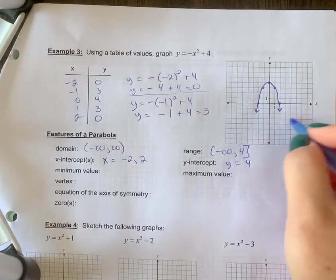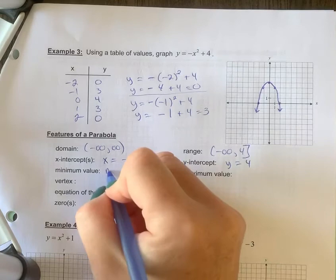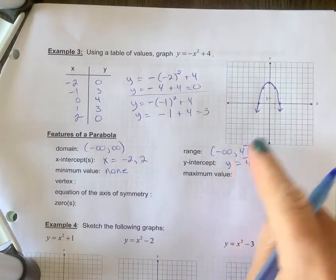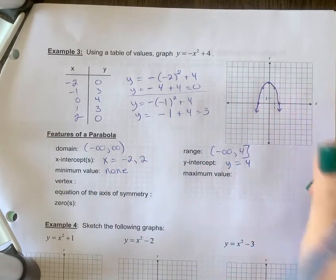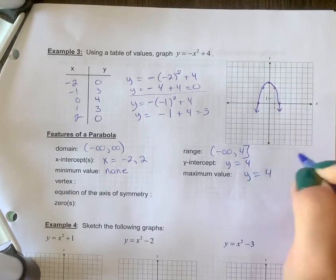The minimum value, there is no minimum. There's no lowest point, so none. But it has a max now. So the highest point's at 4 on the y-axis. So we say y equals 4.